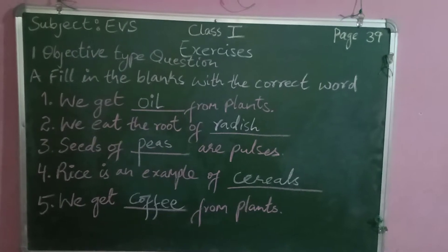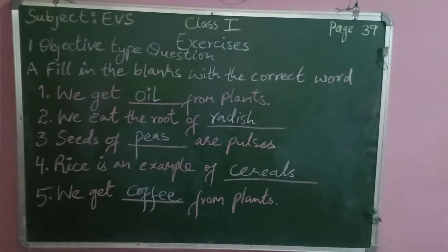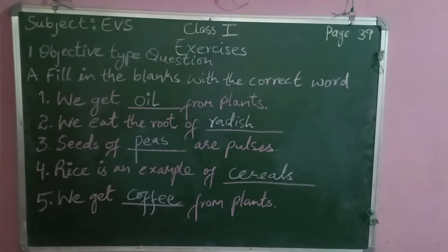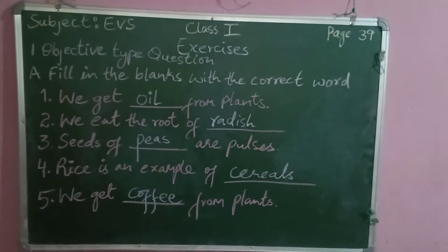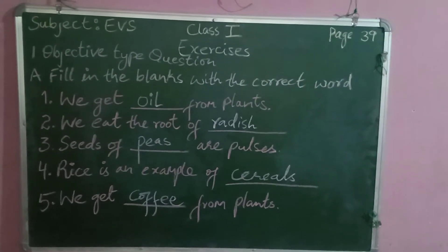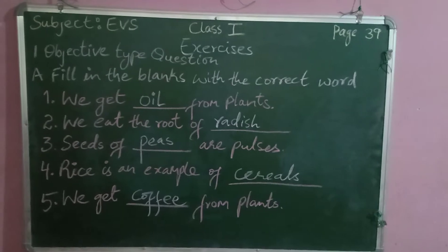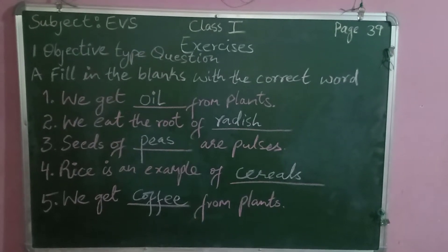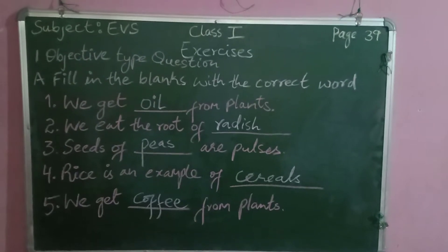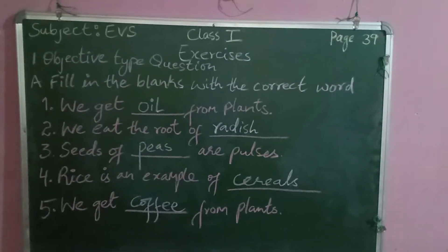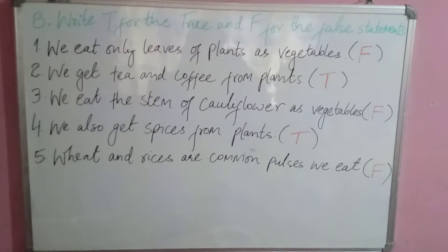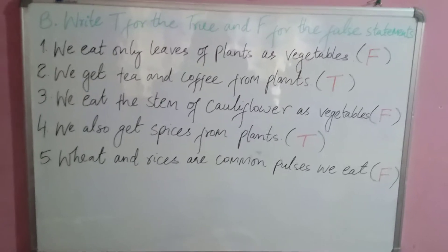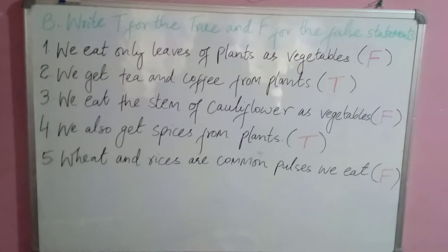Question number five: we get dash from plants. The options are eggs and coffee, so the correct answer is coffee.